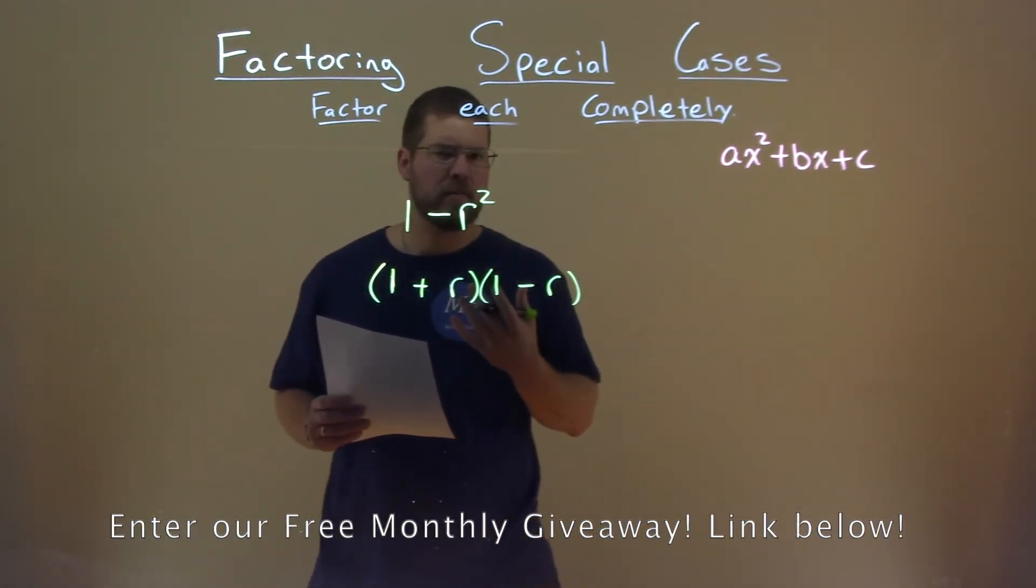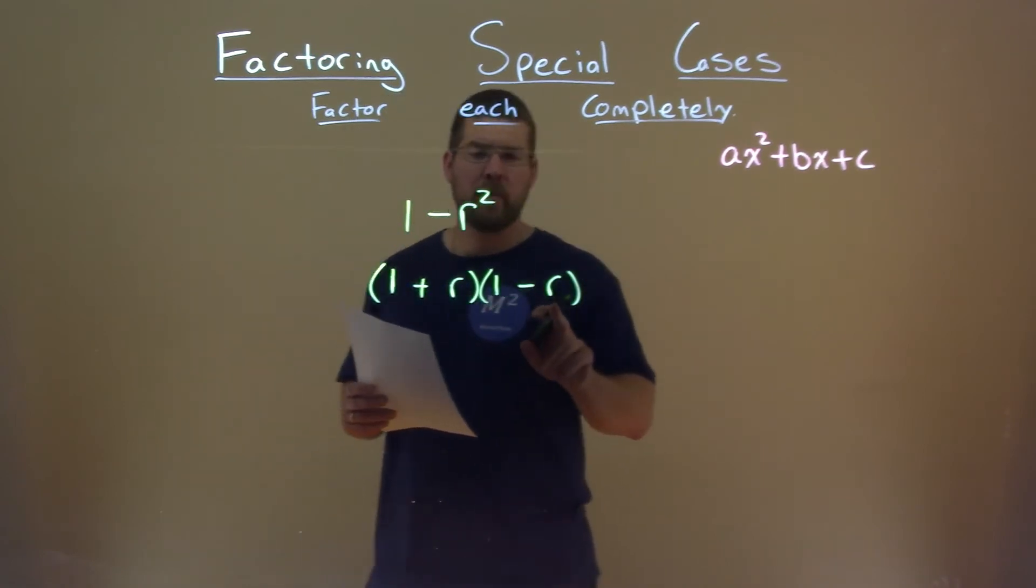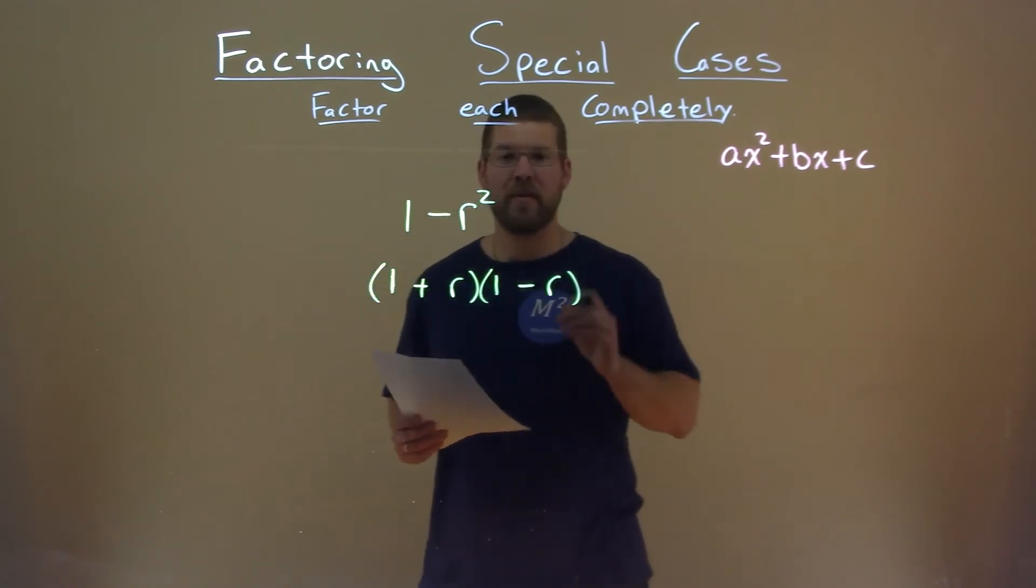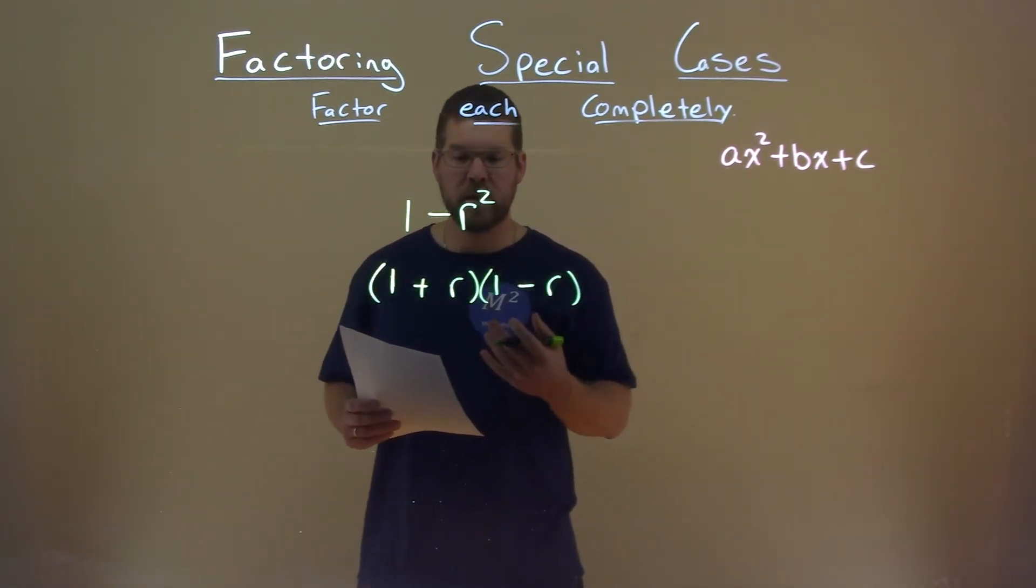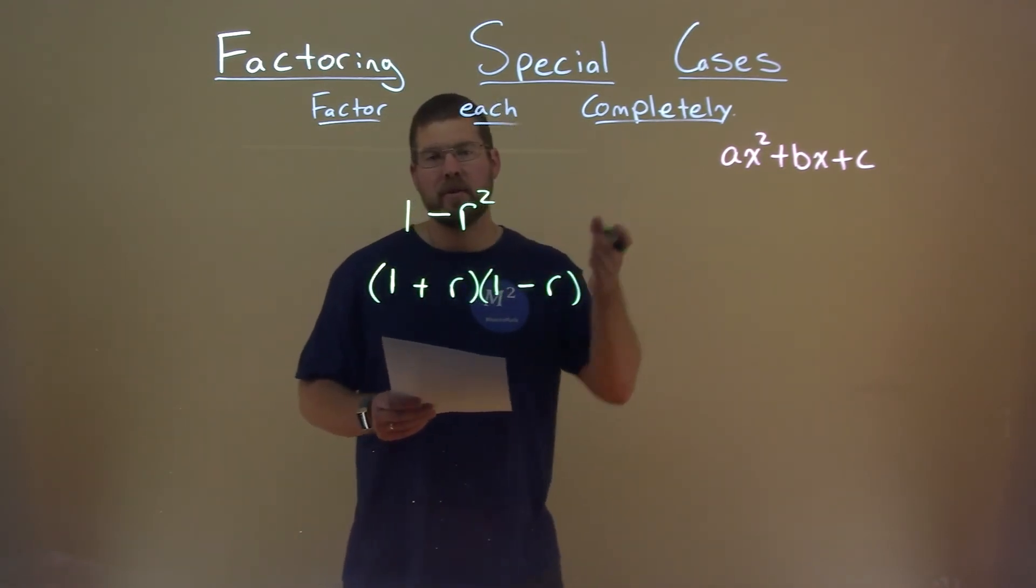What about our B value? There's nothing in the middle. Well watch this, R times 1 will be multiplied by negative R, and R will be multiplied by 1, and we add those two together, they cancel out, making it zero. So here we actually have our answer: 1 plus R times 1 minus R.